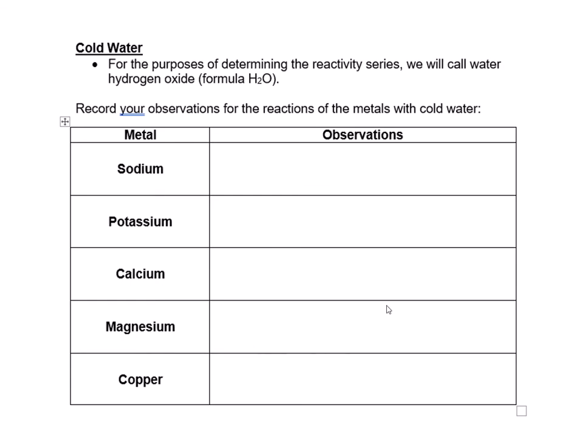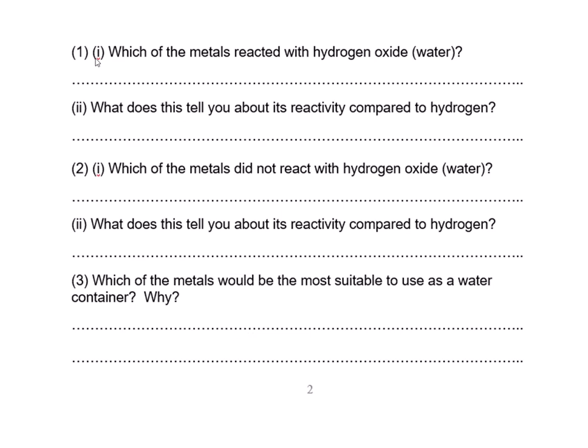To finish your worksheet, fill in observations for sodium, potassium, calcium, magnesium, and copper — rewind the video if needed. Then answer: which metals reacted with water (there are four)? What does that tell you about their reactivity compared to hydrogen? Which metal didn't react, and what does that tell you? Finally, if you were making a water container, which of those metals would be most suitable and why? There's a big clue if you look around your home. Take a picture of your work and upload it.